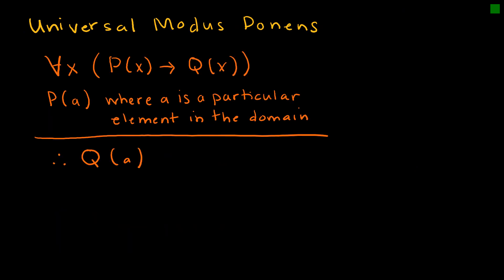And of course our very favorite rule that we use so very often: modus ponens. For all x, if we know that P(x) implies Q(x), and we know that P(A) is true, therefore we know Q(A) is true. We've got that if-then statement, and whenever we have that if-then statement and we can show that the first part is true, then we can show that the second part is true.